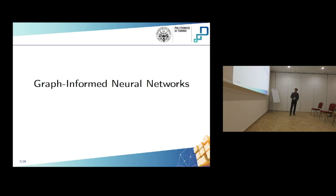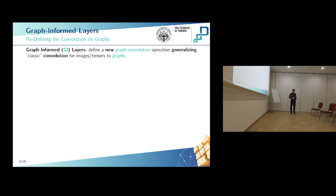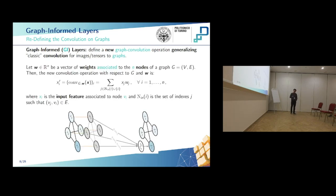Here comes the graph-informed neural networks. We define the graph-informed layers, GI layers from now on, introducing a new graph convolution operation for graphs, generalizing the classic convolution defined for images and tensors. If we consider a vector of weights W, where each element corresponds to one of the nodes of the graph, the new convolution operation with respect to graph G and weight vector W is defined as follows. The output feature X'_i of node v_i is obtained by summing the input feature of node i and its neighbors, multiplied by the weights of the corresponding nodes.